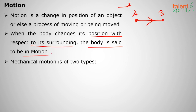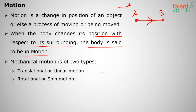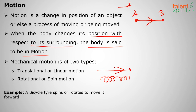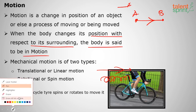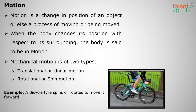Mechanical motion is of two types: one is translation or linear motion, and the other is rotational or spin motion. A bicycle tire spins or rotates to move it forward. You can see on the screen that bicycle tires are rotating — that is rotational or spin motion — and as they rotate they move forward, which is translation or linear motion. So a bicycle has both rotational motion and translational or linear motion.